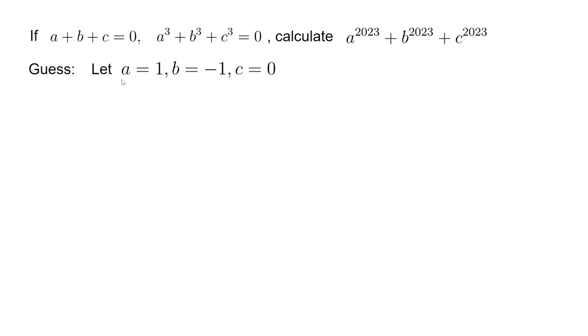So we can use a equals 1, b equals -1, c equals 0, which satisfy both equations. And then we plug that into the target expression and we get this. So the target expression is zero.